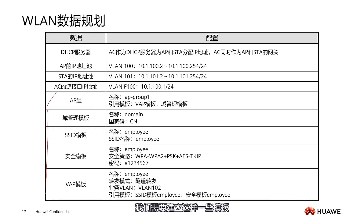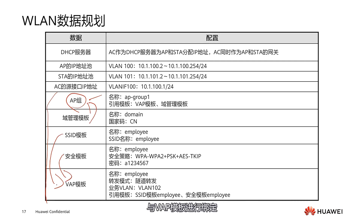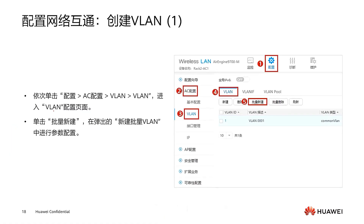We need to establish templates, set up the AP group, and bind the pre-configuration template with AP groups. Then bind the SSID template, security template, and VAP template together. The VAP template also needs to be bound to the AP group.